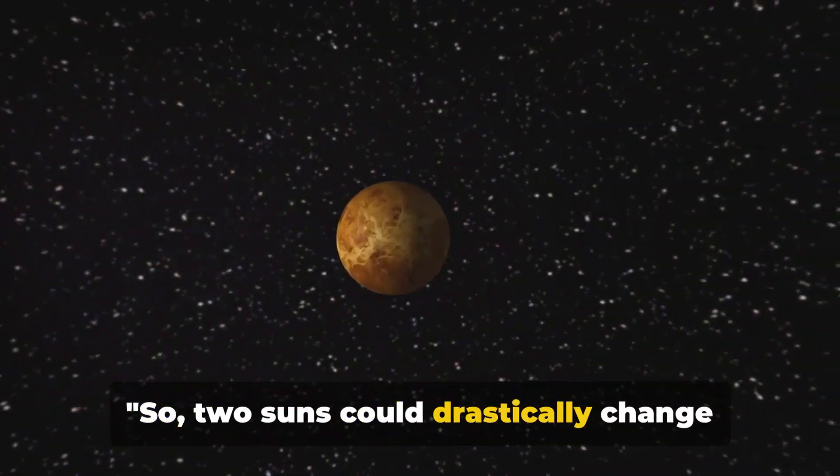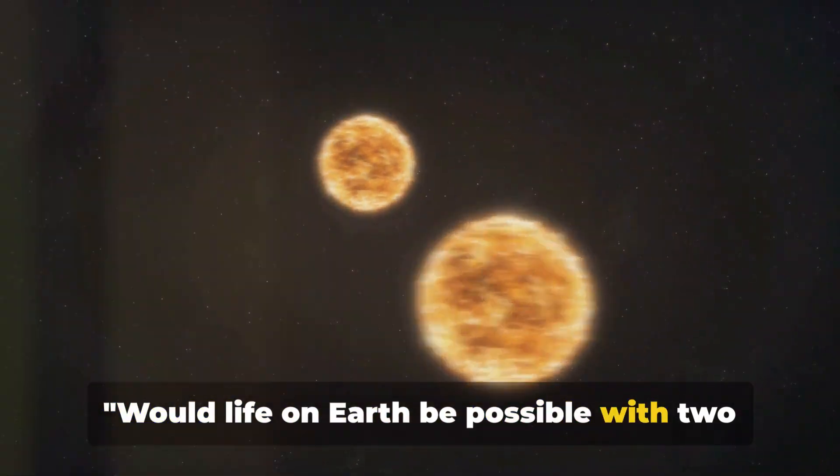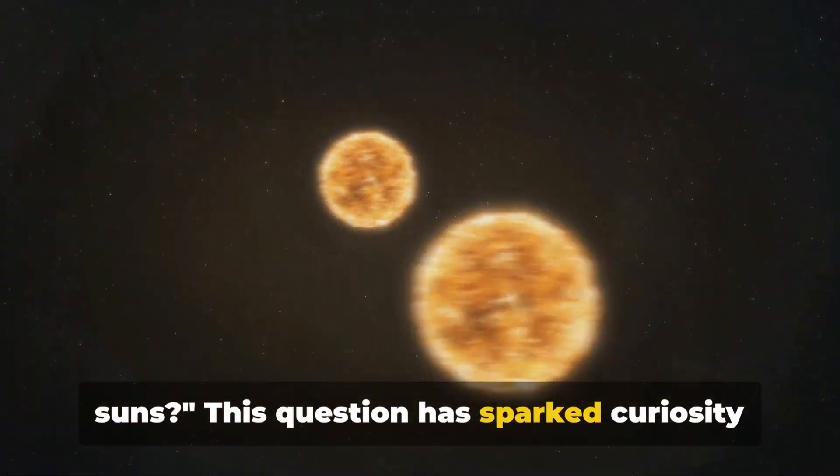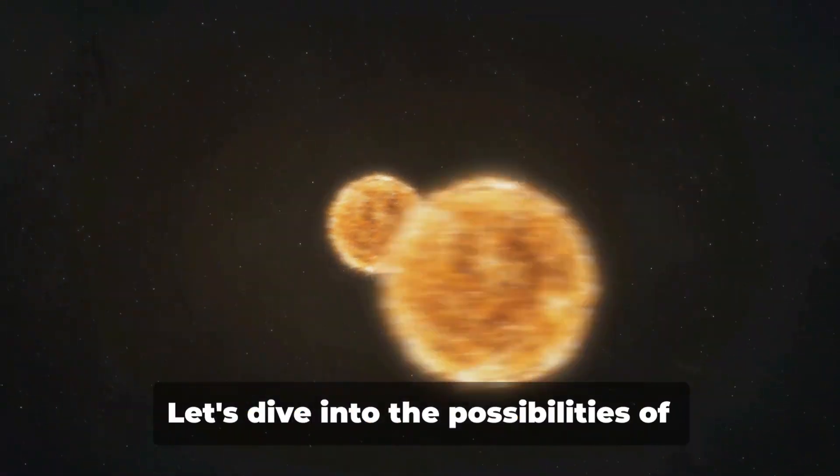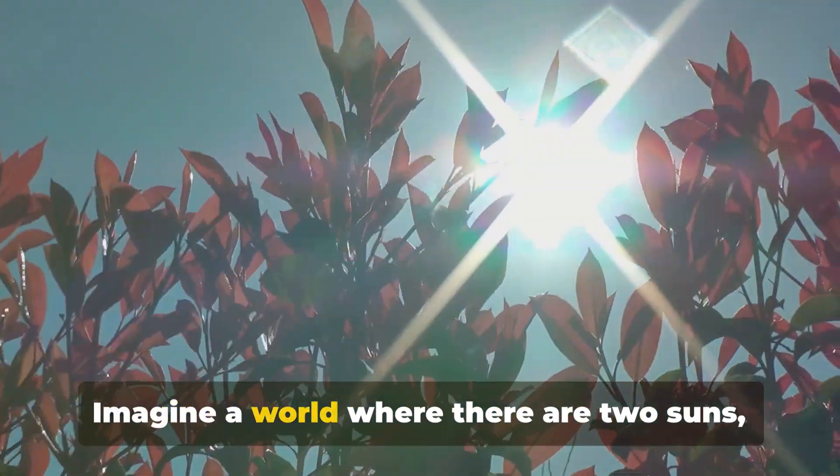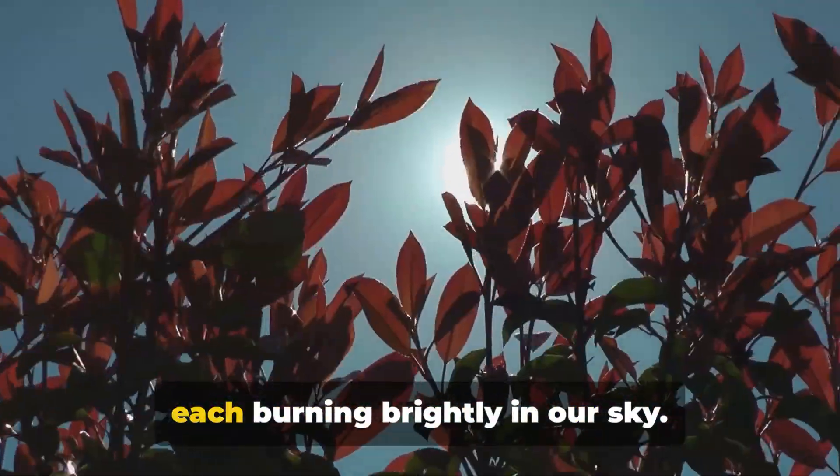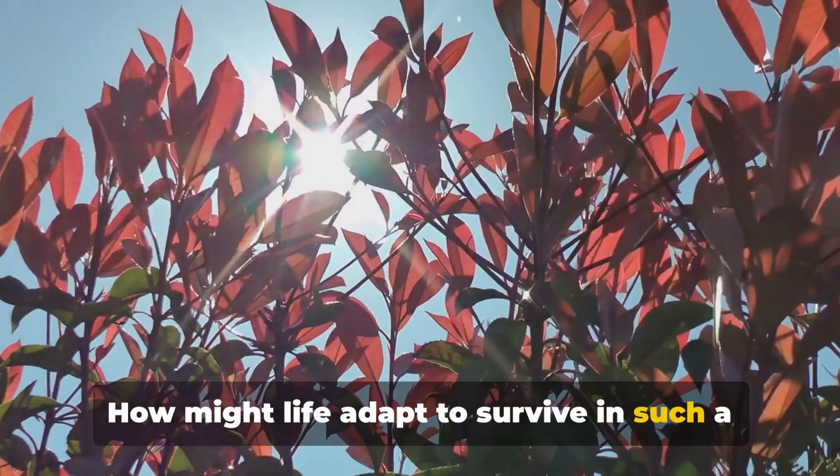So two suns could drastically change life as we know it, but could we survive? Would life on Earth be possible with two suns? This question has sparked curiosity and intrigue among scientists and space enthusiasts alike. Let's dive into the possibilities of survival in a binary star system. Imagine a world where there are two suns, each burning brightly in our sky. How might life adapt to survive in such a scenario?